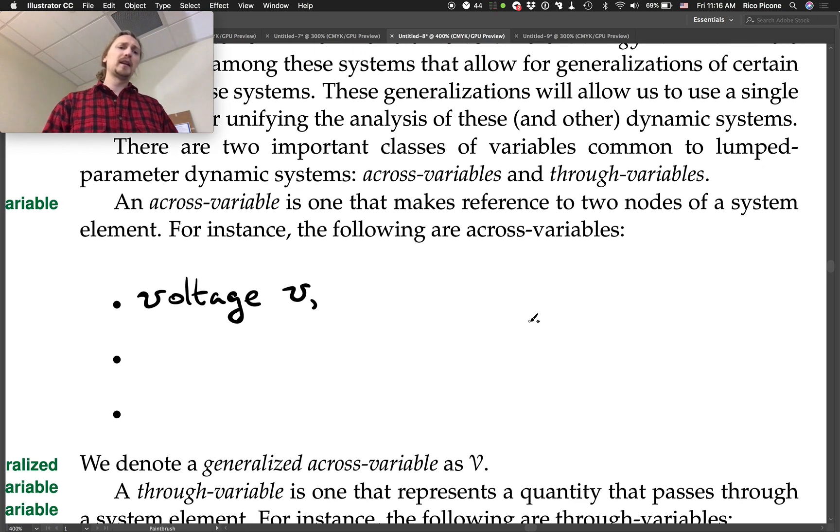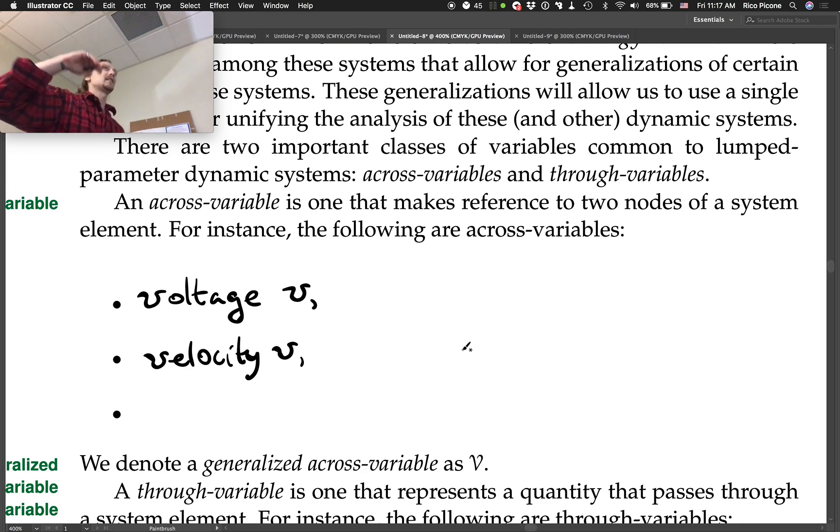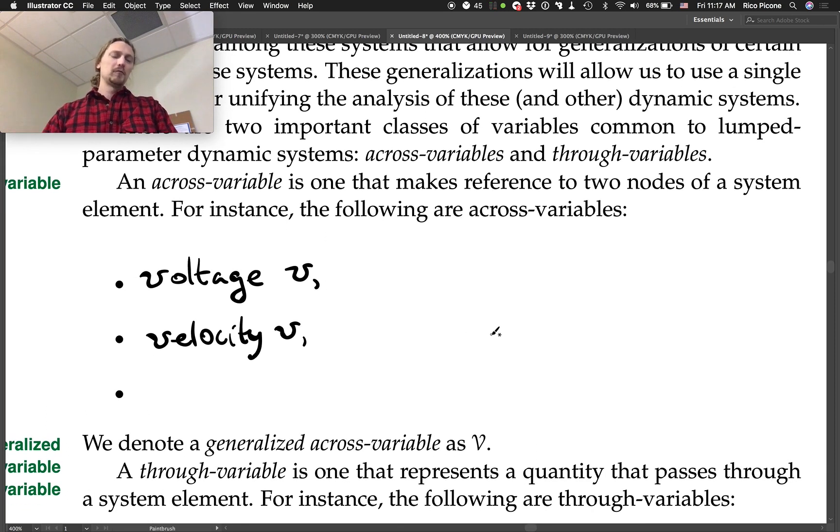So for the translational mechanical system, we also have one. We haven't worked as much with those and talked as much about them. Any ideas on what that would be? Velocity. Velocity. That's right. So velocity and voltage both have V as the variable and they're both across variables. And this sets up me the rest of the semester constantly calling voltage velocity and velocity voltage. So look forward to that. I don't know how to stop myself. It just happens. So this is velocity. We always mean the velocity relative to something, right? So velocities are not absolute in our way of framing this.